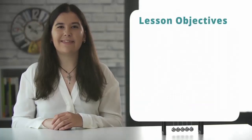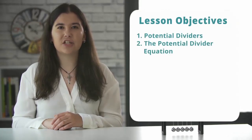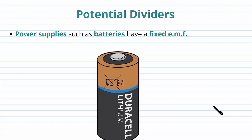In this video we're going to be looking at potential dividers, the potential divider equation, and we're going to finish with a summary. We're going to start off by looking at what potential dividers are - it's essentially a way of setting up a circuit so that the EMF from a power supply can be split between different components.